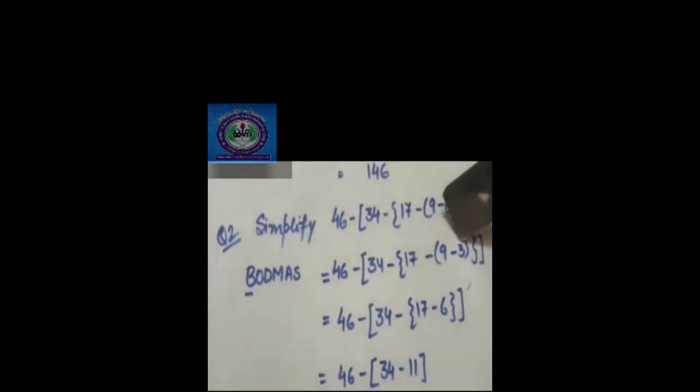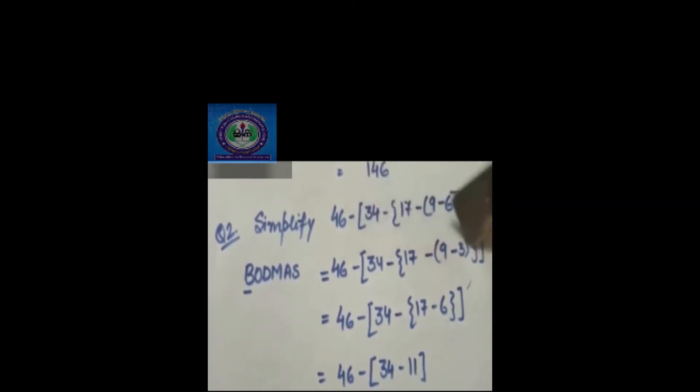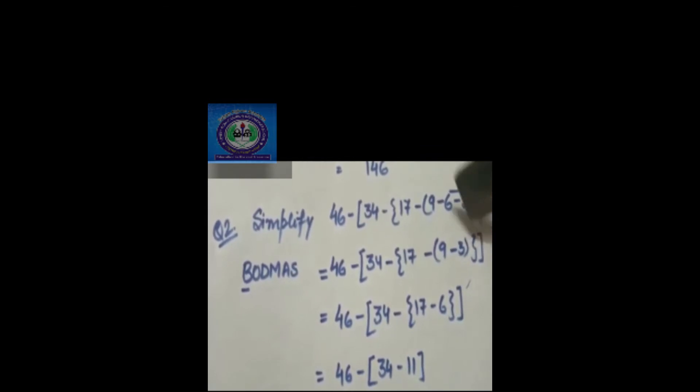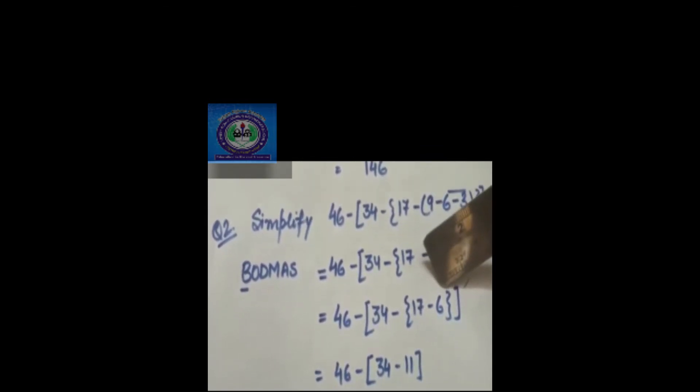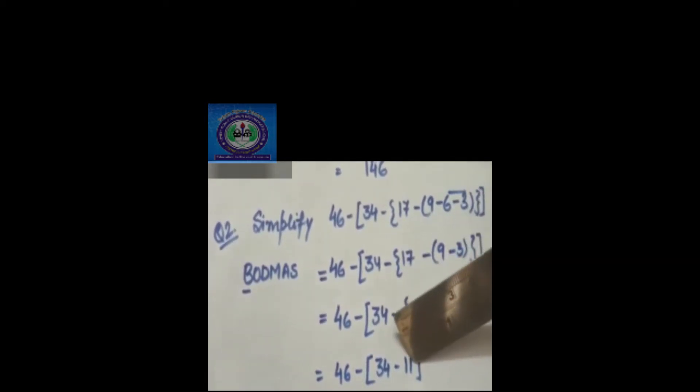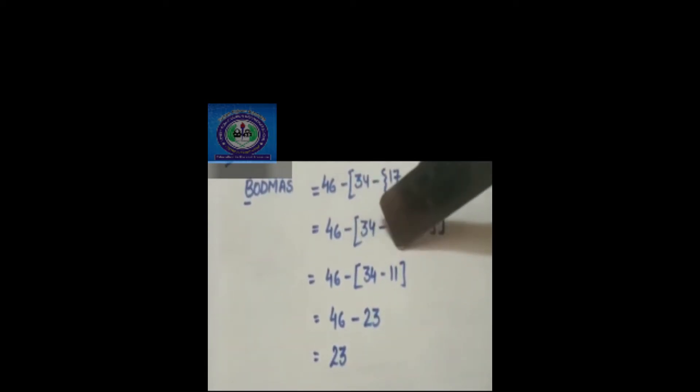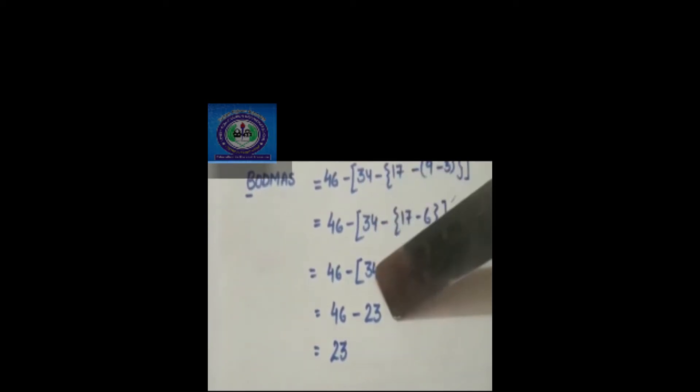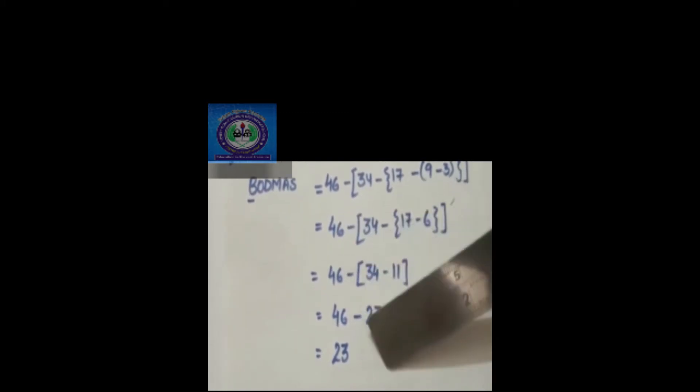So 6 minus 3 will be 3. So rest will remain the same and after that we will use parenthesis. 9 minus 3 will be 6. After that we will solve curly brackets. 17 minus 6 will be 11. After that we will solve square brackets. 34 minus 11 will be 23. Then we will subtract the numbers. 46 minus 23 will be 23.